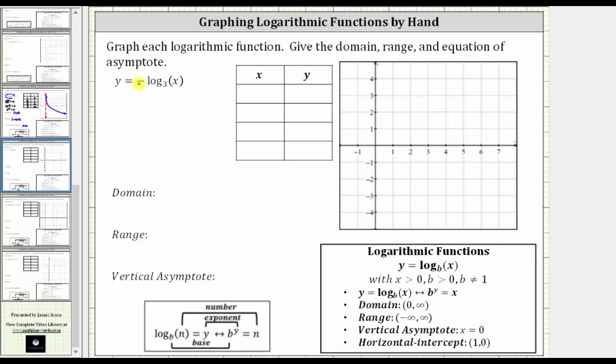So this negative sign is not going to change the domain, range, or vertical asymptote. So let's go ahead and record this information.